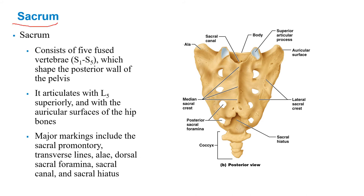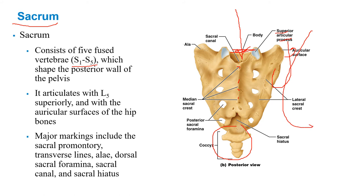The sacrum has S1 through S5 — five segments. Running through it is the continuation of the vertebral canal, now called the sacral canal. It has its own superior articulating facets that articulate with L5's inferior processes. On the sides is the auricular surface — it looks like an ear — which articulates with the ilium at the sacroiliac joint. The posterior sacral foramen transmits S1 through S4 nerves going to your lower back and legs, helping form the sciatic nerve with the lumbar nerves.